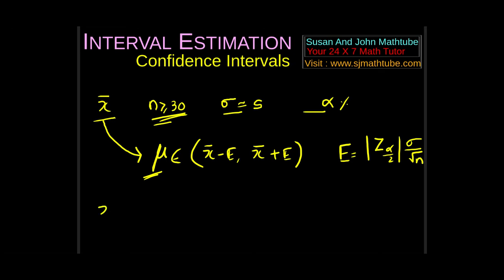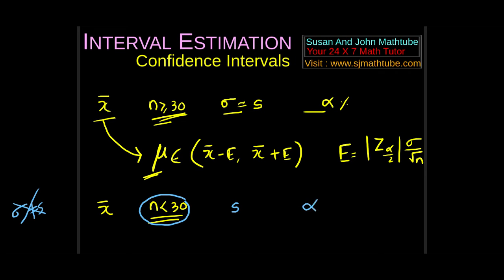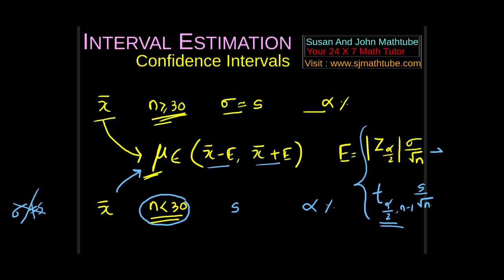Mu belongs to (x̄ − E, x̄ + E). This E is given by |z_{α/2}| × σ/√n for a large sample. Now, suppose the same thing is given but the sample size is small — that's the only difference. When sample size is small, sigma is not equal to s, so don't approximate. You know s or you will evaluate s from the data. The significance level is the same, but the error is given by the t distribution: t_{α/2, n−1} × s/√n.